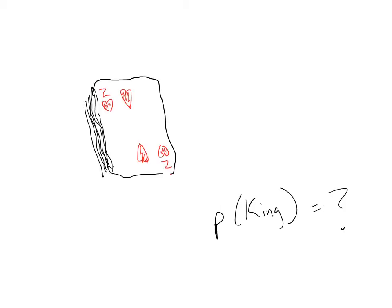Here's another example. Say we draw a random card from a deck of playing cards, and we want to know the probability that we'll draw a king. In this case, there are fifty-two equally likely outcomes. Four of those outcomes would be kings, so our probability of drawing a king is four over fifty-two, or one over thirteen.